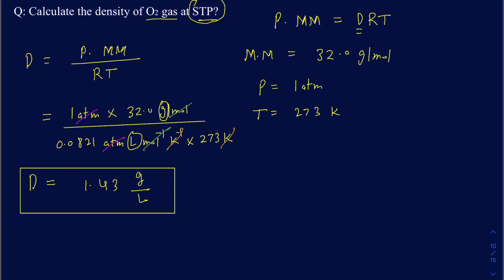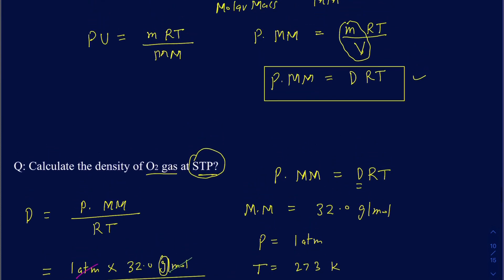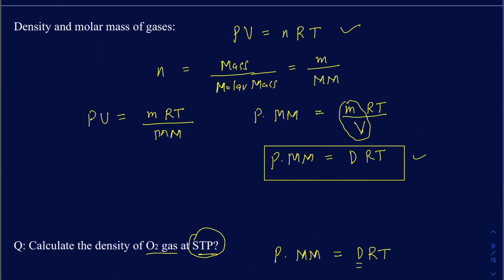So that's how you're going to be calculating the density using this P MM equals DRT equation, which is actually retrieved from the PV equals nRT. If you have any questions, feel free to leave comments below.